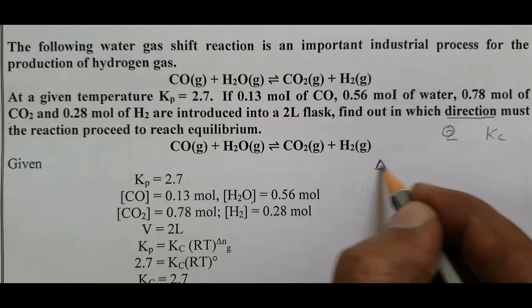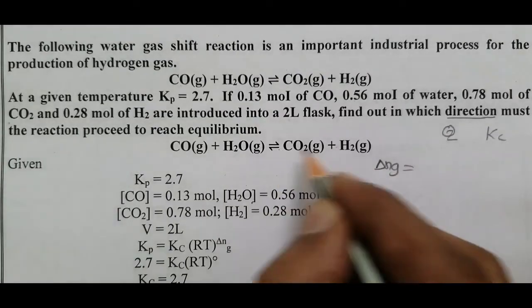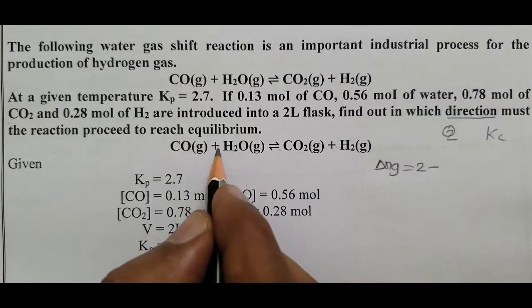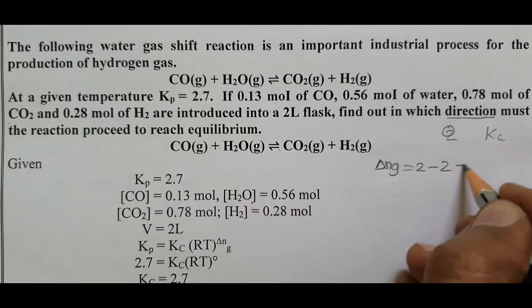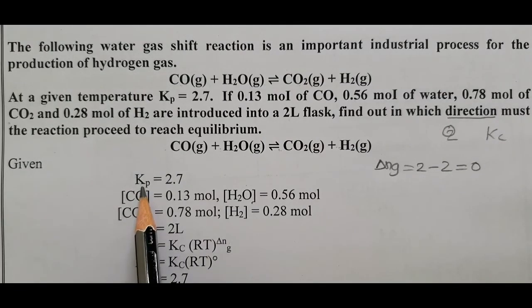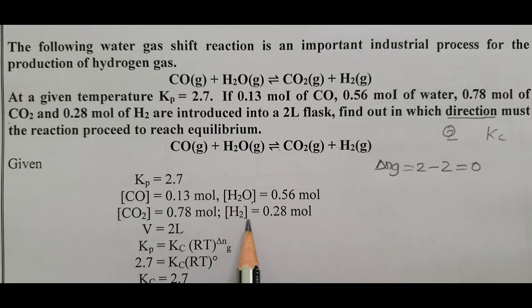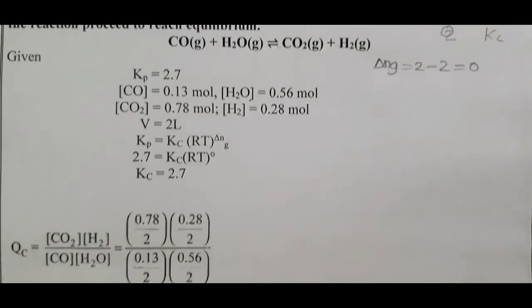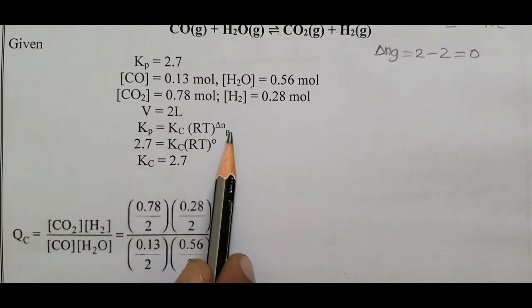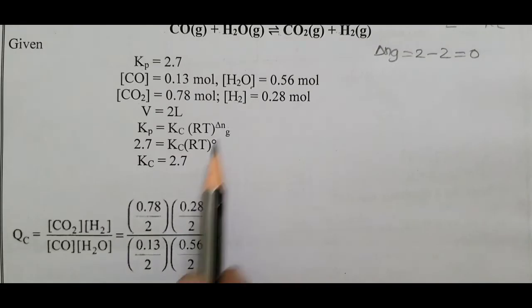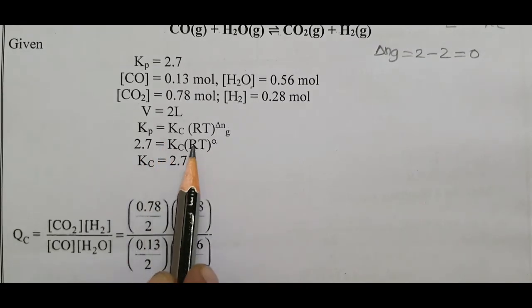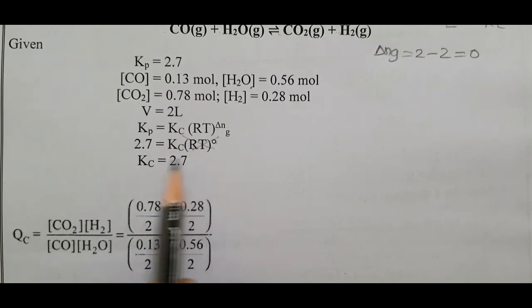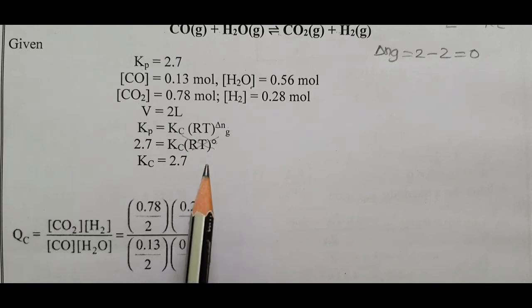First, calculate Δng: number of moles of gaseous products = 1+1 = 2, minus moles of gaseous reactants = 1+1 = 2, so Δng = 0. Using Kp = Kc(RT)^Δng, with Δng = 0, anything to the power 0 = 1. So Kp = Kc, meaning Kc = 2.7.